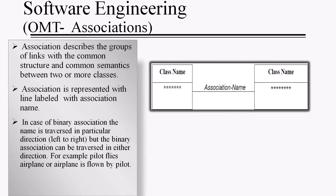An association describes groups of links with common structure and common semantics between two or more classes. You can say it is a connection between two classes. An association is represented by a line labelled with the association name. In a binary association, the name is traversed in a particular direction, left to right, but the association can be traversed in either direction — for example, 'Pilot flies airplane' or 'Airplane is flown by pilot.'